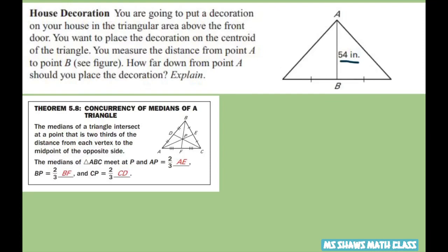So we're going to use the fact that AB equals 54 inches. If you have BP that's two-thirds of the total length and BF would be one-third.